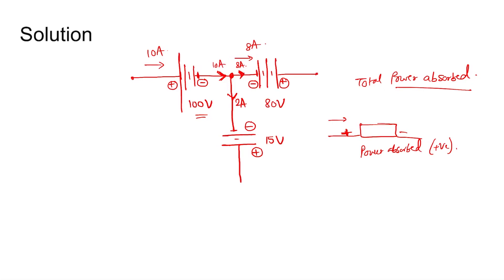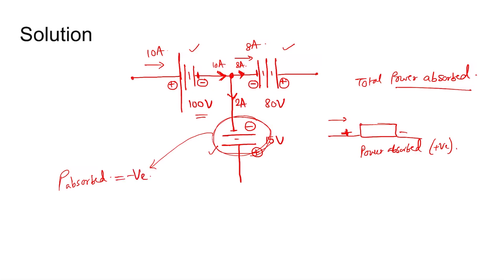Now you know the currents in all the branches. For the first element, you can see 2 ampere is coming out from the plus terminal, so this element is delivering power — it is not absorbing power. Therefore, power absorbed is negative, equal to minus 30 watts. The current is coming out from the plus terminal, so it is delivering power, or in other words, absorbing negative power.